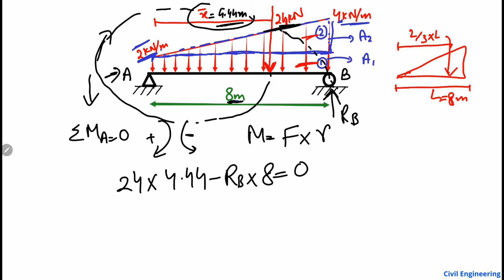Setting the summation of moments about A equal to zero and solving for RB, we get RB = (24 × 4.44) / 8 = 13.32 kN.